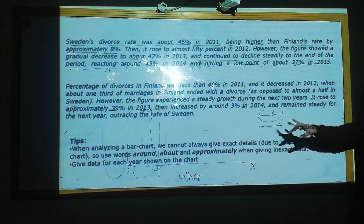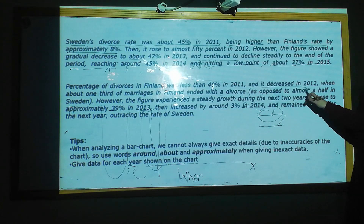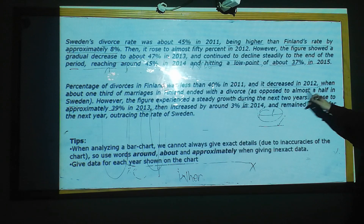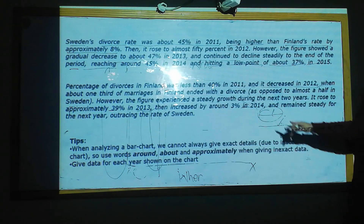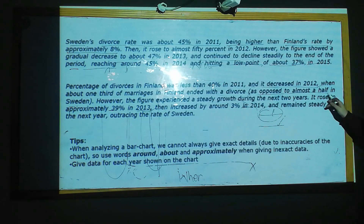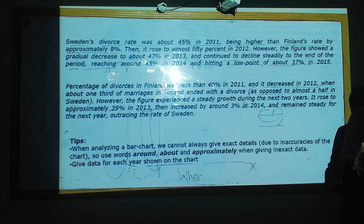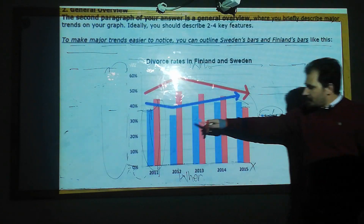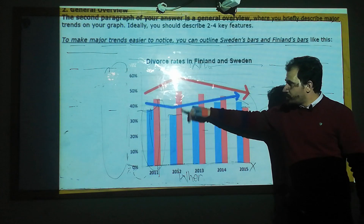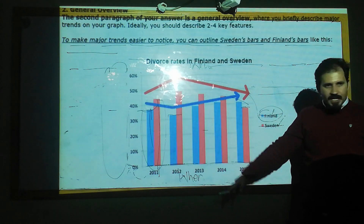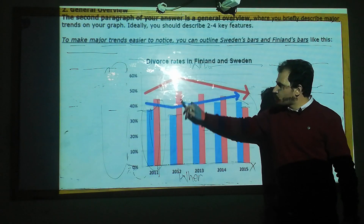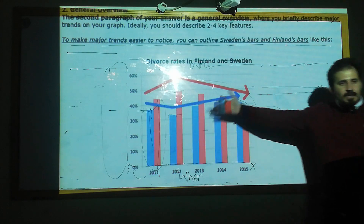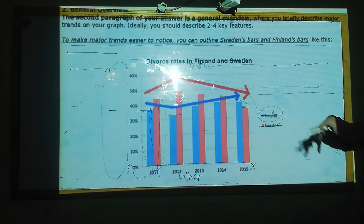After this, it decreased in 2012, when about one-third of marriages in Finland ended with a divorce, as opposed to almost a half in Sweden. We want to do comparison here — in 2012, Finland's rate is too much lower compared to Sweden; it's almost half of that.